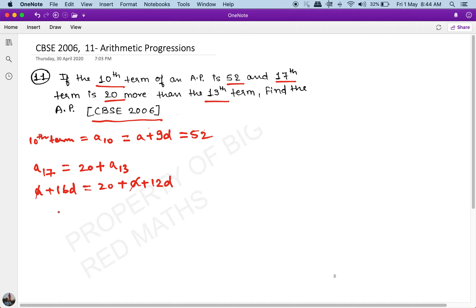a gets cancelled with a, and if I move the d terms to one side, it becomes 16d - 12d = 20. This becomes 4d = 20, or d = 5. This was my condition 1.